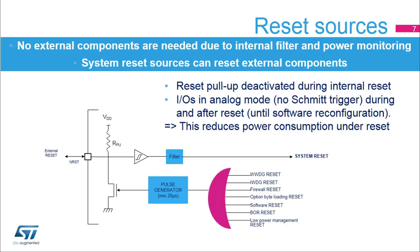Here is the simplified block diagram of the system reset. All internal reset sources provide a reset signal on the NRST pin, which can be used to reset other components of the application board. No external reset circuitry is needed due to the internal glitch filter and the safe power monitoring feature, which guarantees the reset of the application when VDD is below the selected threshold. The internal pull-up on the NRST pin, which maintains a high level when no reset signal is driven low, is deactivated when an internal reset is driven in order to reduce power consumption under reset. Additionally, all I/O pins are placed in analog mode during and after reset to eliminate power consumption through the Schmidt trigger when the I/Os are floating under reset and before software initialization.